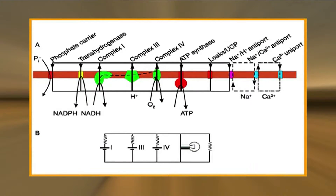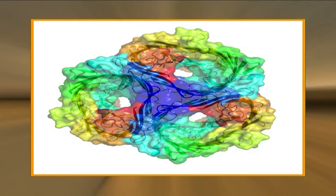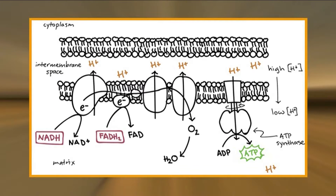In contrast to the inner membrane, the outer mitochondrial membrane is highly permeable to small molecules. This is because it contains proteins called porins, which form channels that allow free diffusion of molecules smaller than about 1000 Daltons. The composition of the intermembrane space is therefore similar to the cytosol with respect to ions and small molecules. Consequently, the inner mitochondrial membrane is the functional barrier to the passage of small molecules between the cytosol and the matrix, and it maintains the proton gradient that drives oxidative phosphorylation.